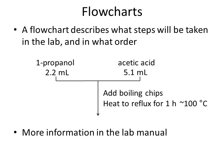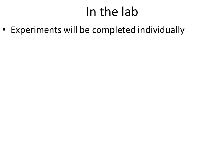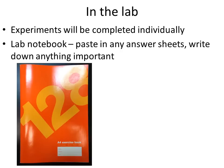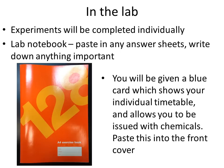There's more information on flowcharts in the lab manual and in the appendix folder on Blackboard. In the lab all experiments will be completed individually. You're going to be given a lab notebook. You need to paste into this any answer sheets you're given, paste into it your flowcharts, and write down anything important — any observations you make in the lab. If you want to query a mark or ask a question you must bring your notebook with you so we can check what you actually did. In your first lab you'll be given a blue card, which will show your individual timetable and allow you to be issued with chemicals. Make sure you paste this blue card into the front cover of your lab book.